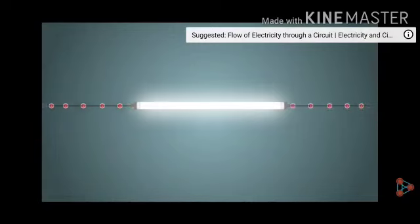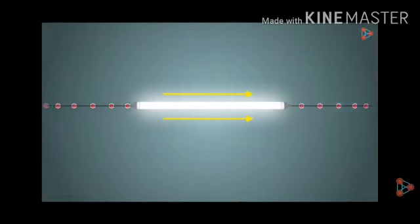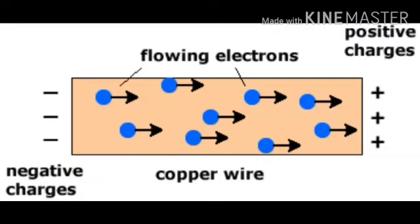As you know that the flow of electric charge through a conductor is called electric current or electricity. You also know that the motion of electrons makes the electricity flow.